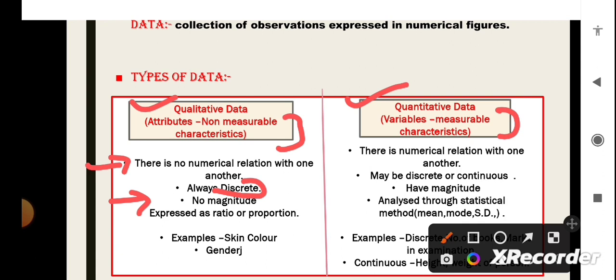The qualitative data are expressed as ratio or proportion. On the other hand, the quantitative data are those in which there is numerical relation with one another. They may be discrete or continuous. They have magnitude and these are analyzed through statistical methods like mean, mode, standard deviation. Some examples of discrete variable under quantitative data are the number of books or the marks obtained in exams. And, the examples of continuous variable under quantitative data are height and weight of a person.